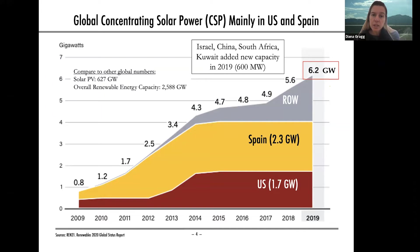Most of the CSP capacity is in the US and Spain — those are the two main markets. But what you might notice from this graph showing global capacity is that those markets have stagnated. Both the US and Spain haven't really added any CSP power plants since about 2015, so although that's where most of the capacity is, it's definitely not where the growth is taking place.